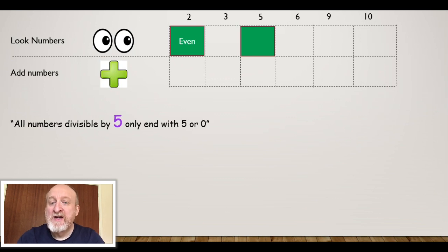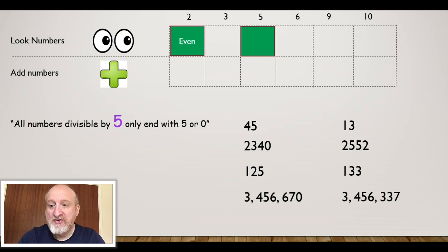Okay, next number, 5. Any number that ends in a 5 or a 0, you probably know this already. So 45, 2,340, 125, and there's that 3 million number again. They all end in a 0 or 5, and so therefore they're divisible by 5.